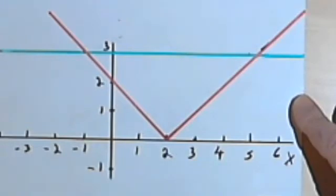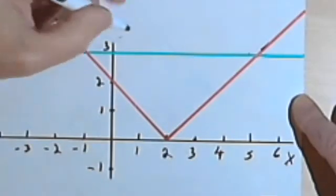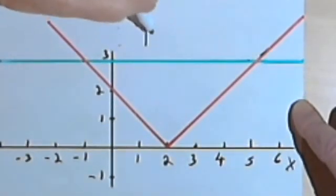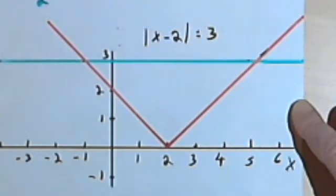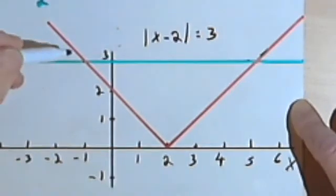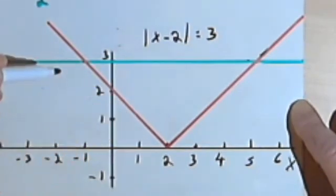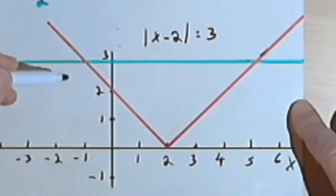So here's how we're going to use the graph to solve the problem. Let me write the problem right here. The absolute value of x minus 2 equals 3. Well, if these were just regular linear equations, what I would do is look for the place where the two, like a system of equations, I would look for the place where the two graphs cross, and that would be my solutions.